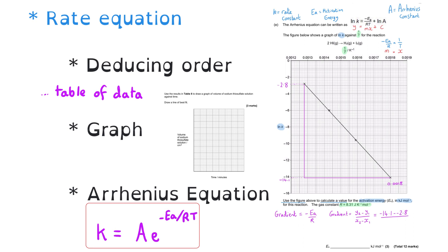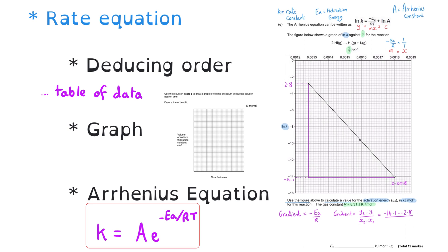The Arrhenius equation comes up with quite high frequency — that could be a calculation using the Arrhenius equation itself, or there is a graph you can plot which has a negative gradient and you use that gradient to calculate the activation energy. Good luck everybody!